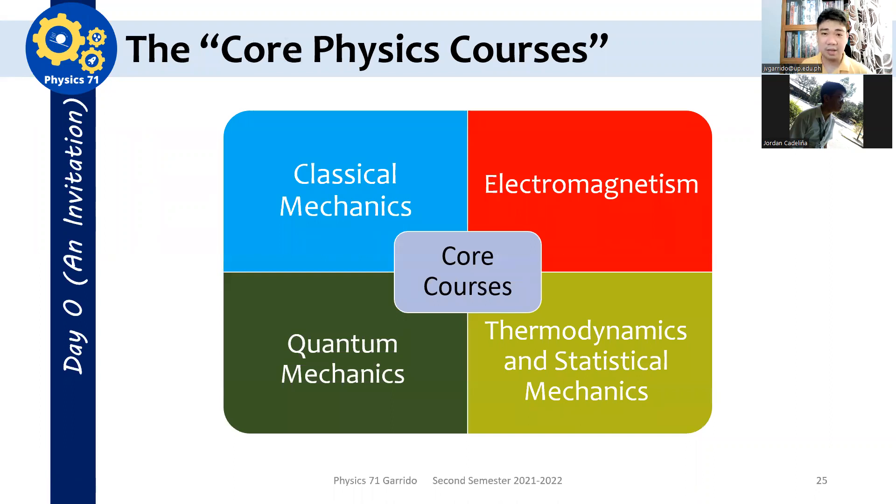But before that, let's go to the so-called core physics courses. So essentially, especially for physics majors, hindi naman kayo majors alam ko, but in order for you to master physics, you need to at least master these core, which is classical mechanics, electromagnetism, quantum mechanics, and thermodynamics and statistical mechanics. Some of you or most of you do not have Physics 73 anymore. Ngayon, only, I think, triple E and GE na lang ata ang nagre-require ng Physics 73. Nagbawas talaga ng subjects yung mga departments because of the K-12 curriculum.